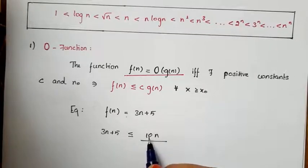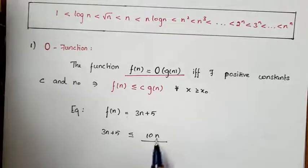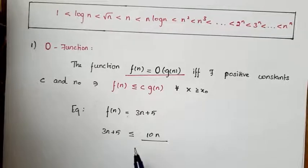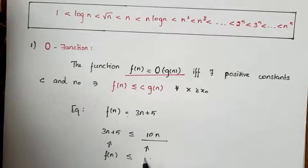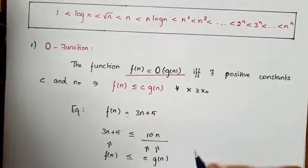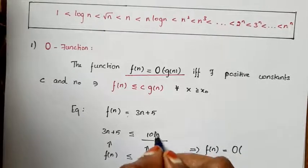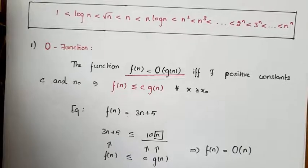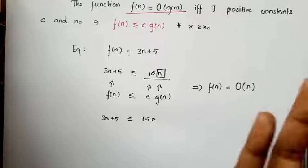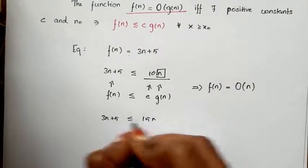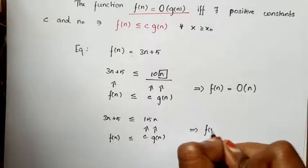If we take 10n, this is a single-term function and it is greater than or equal to 3n plus 5. If we take n equal to 1: 10 times 1 is 10, and 3 times 1 plus 5 is 8. Clearly 8 is less than or equal to 10, so 10n is greater than or equal to 3n plus 5. This satisfies our condition f(n) ≤ c·g(n), so we can write f(n) = O(n).